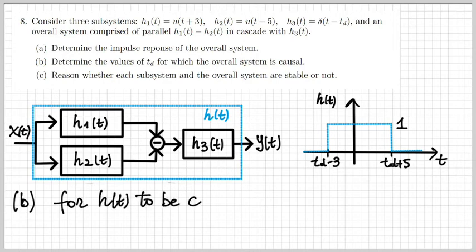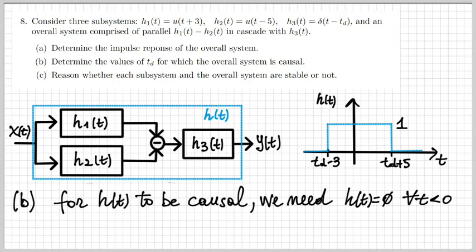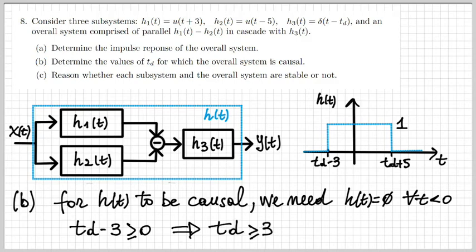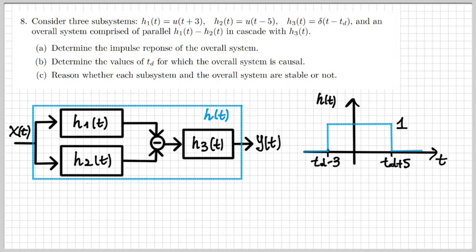Now let's determine the values of td for which the overall system is causal. For the system to be causal, h(t) must be zero for all negative times. As seen in the figure, this is true when td minus 3 is positive, so when td is greater than 3.